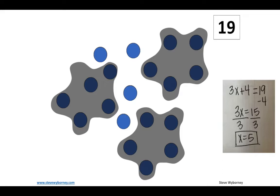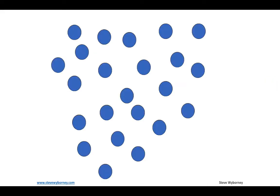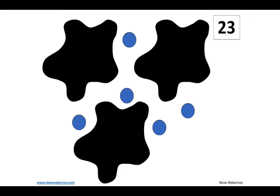Now I'm going to let you try the next one on your own. Count the objects — you should have gotten 23 — and there are three splats. Take a minute and see if you can find out how many are underneath each of the splats, and then see if you can build an equation.